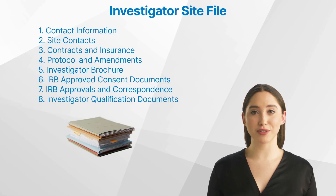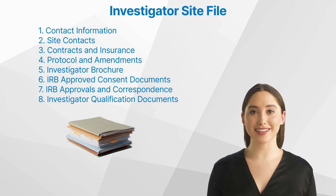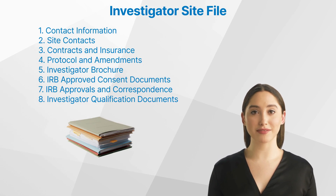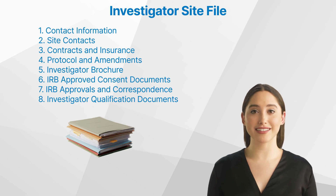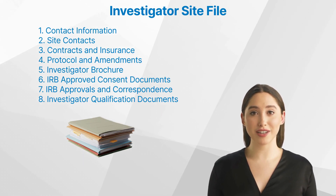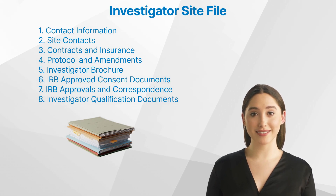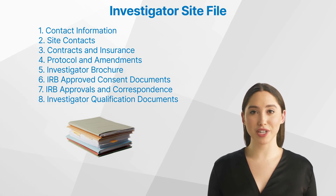Let us have a look at the components of the investigator site file. The investigator site file consists of various sections and documents that provide a comprehensive overview of the clinical trial. While the specific order and contents may vary depending on the study, the following are some common components typically found in an investigator site file. First, contact information: this section includes the contact details of key personnel involved in the study, such as the clinical study associates, medical monitors, safety managers, and drug safety surveillance associates. It provides a point of reference for communication and collaboration throughout the trial.